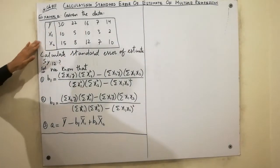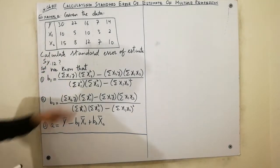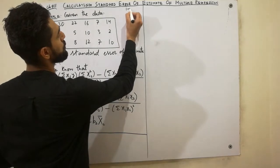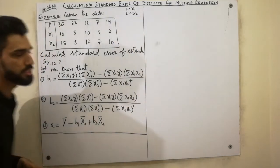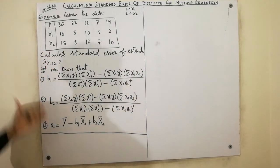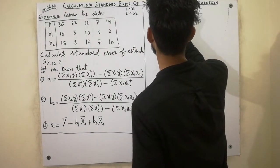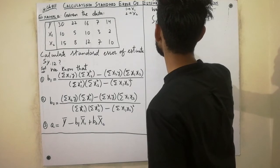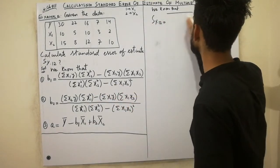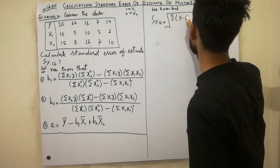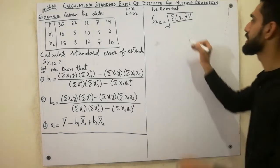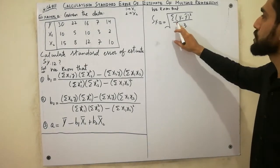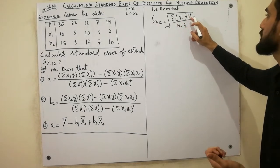Here, generally given y, x1, x2, we have to calculate the y.12 standard error of estimate — because y shows the y value, 1 shows x1, and 2 shows x2. The formula of the standard error of estimate is: the square root of summation of (y minus y-hat) squared, divided by n minus 3.